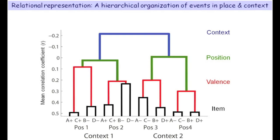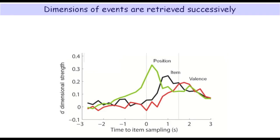We were curious as to whether these different dimensions were coded conjunctively, or whether we could find evidence that they were expressed as distinct elements as animals sampled each of the items. Indeed, we found that each dimension was expressed successively at the start of each sampling event.